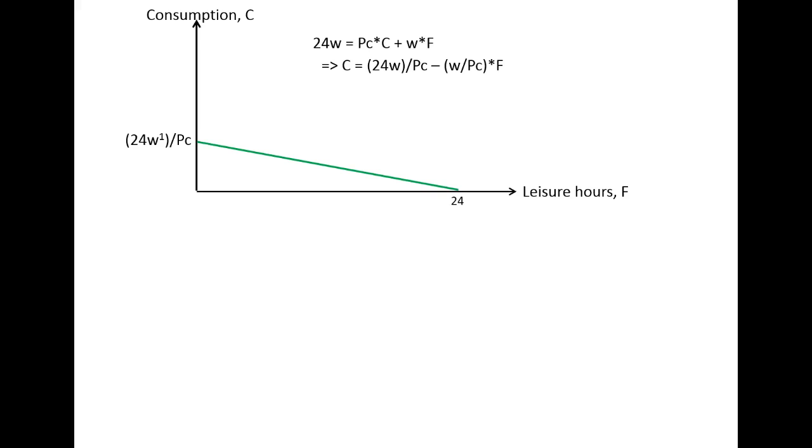To find the utility maximizing solution for this consumer, we have to introduce the utility function as well. We find the utility function that is as far out as possible, the highest available utility that we can achieve. And we see that we have this tangency fulfilled again, so the budget constraint will be tangent to the utility curve.